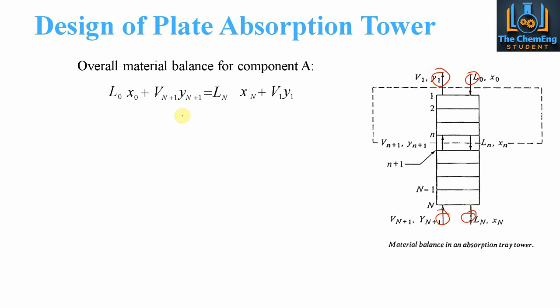So if we look at this balance, we can see that L0, X0 corresponds to the inlet. So L0 is the flow rate, X0 is the fraction, plus Vn+1, Yn+1, so that would be here, this is the other inlet, must be equal to the outlet, which is Ln, Xn, plus V1, Y1. Now these are just nomenclature terms, we can number these depending on the number of stages we have. So again, the N is just the generic stage number. So we'll look at that in just a second.